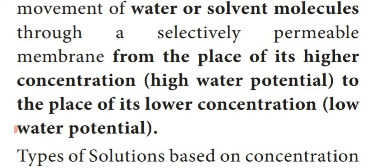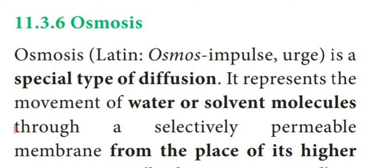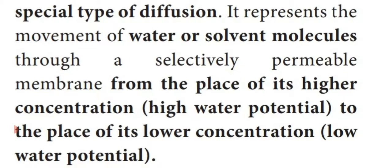Write the question on top of the paragraph: What is osmosis? Movement of water or solvent molecules from higher concentration to lower concentration, or from high water potential to low water potential, through a selectively permeable membrane is known as osmosis. So when two different concentrations of a solution exist, solvent molecules move across the semi-permeable membrane from higher to lower concentration — that is known as osmosis.